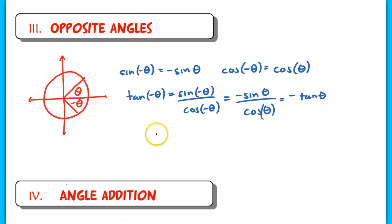And therefore we have our third identity, the tangent of negative theta is equal to negative tan theta, so the opposite of tangent theta. So here are your three identities for your opposite angles. I'm just going to box these.